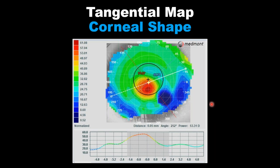Let's look at the same cornea in the tangential map — what we see is that the cone is very centered to the pupil. Remember: the tangential describes corneal shape, it describes where the cone is, what is the size of the cone, what is the shape of the cone.